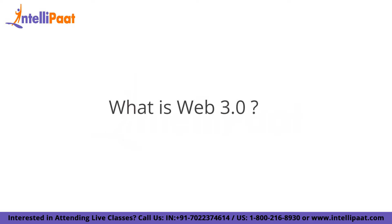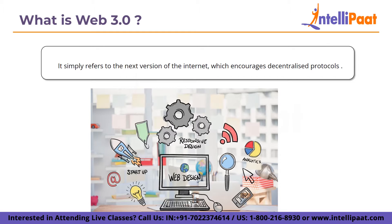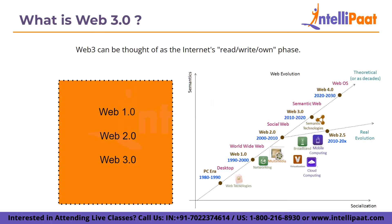Web 3.0 is a term you may have heard a lot recently. It simply refers to the next version of the internet, which encourages decentralized protocols and seeks to lessen reliance on huge digital giants such as YouTube, Netflix, and Amazon. To comprehend Web 3.0, it helps to first understand what came before it. Web 1.0, the initial version of the internet, debuted in the late 1990s and consisted of a collection of links and home pages.